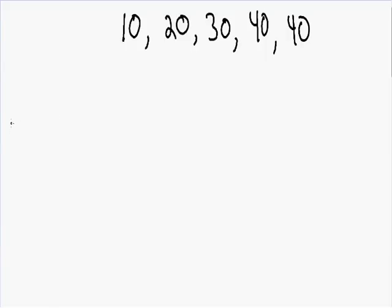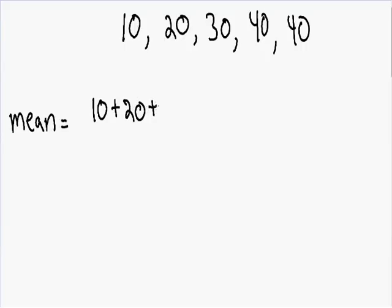Let's start out and find the mean. The mean is more commonly known as the average. So we need to find the average of this set of numbers. In order to find the mean, you just have to add all the numbers. So we add 10 plus 20 plus 30 plus 40 plus 40, and then we need to divide by the total amount of numbers.